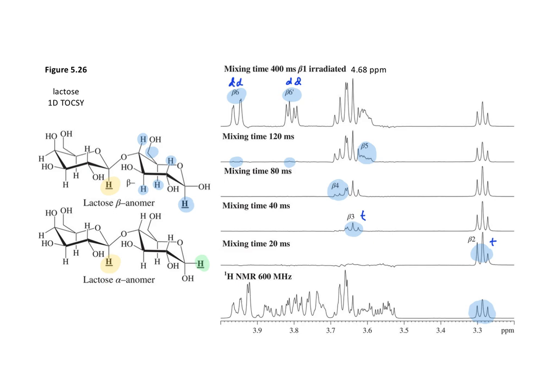Although the 1D TOCSY experiments require multiple experiments and more time used on the instrument, I find that this is probably the clearest way to assign all of the individual protons. And by extension, we can then assign the individual carbons looking back at the HMQC spectrum.